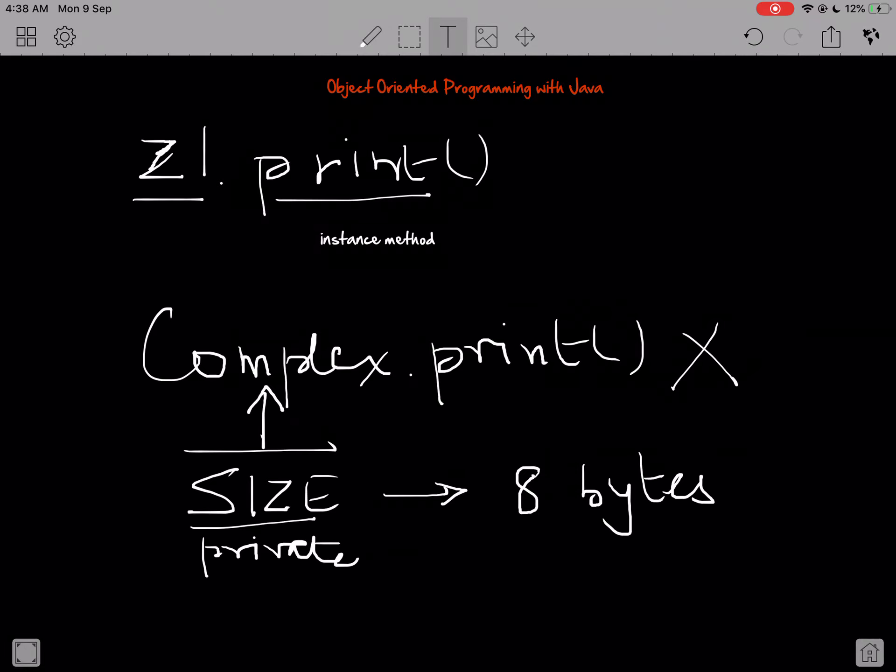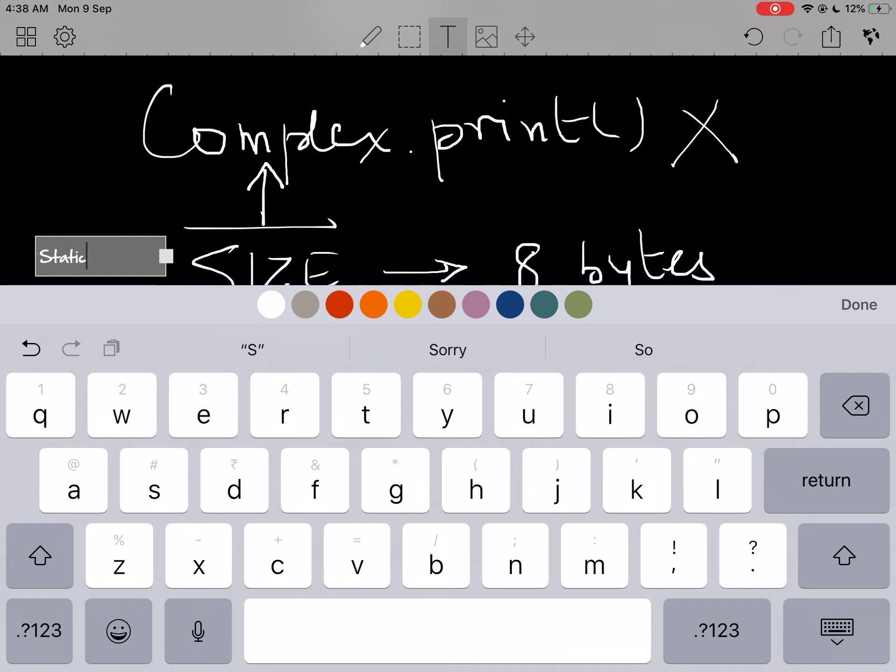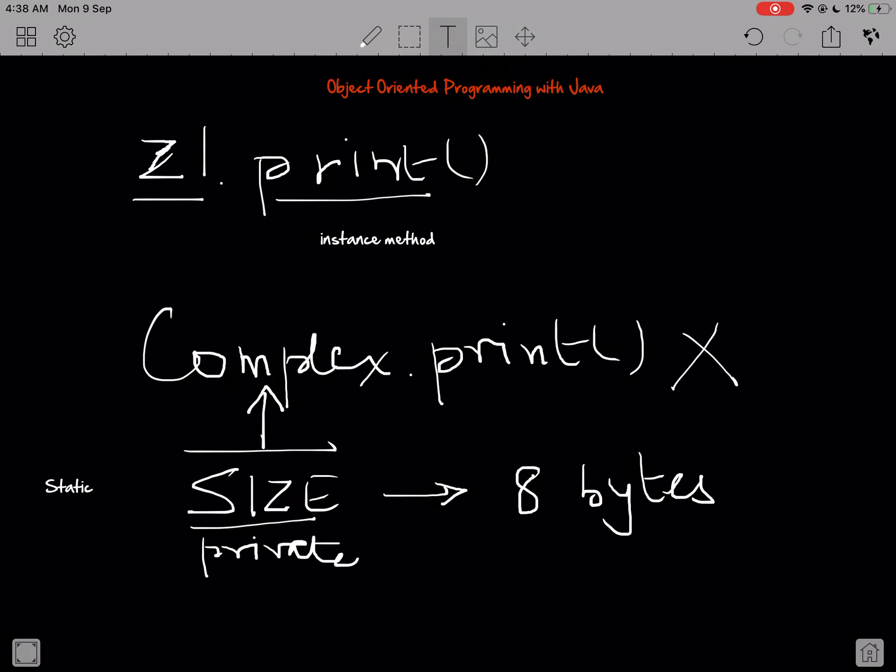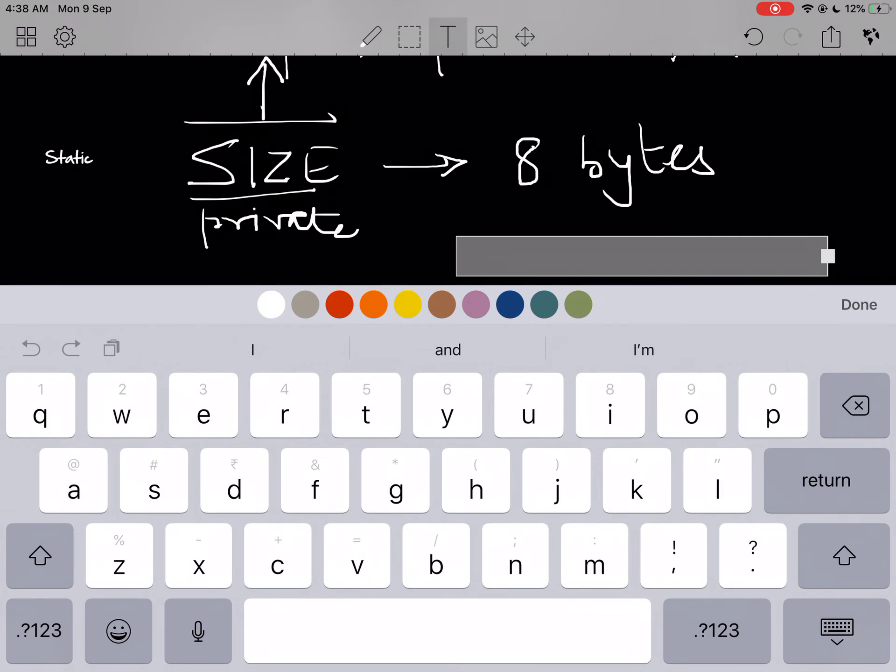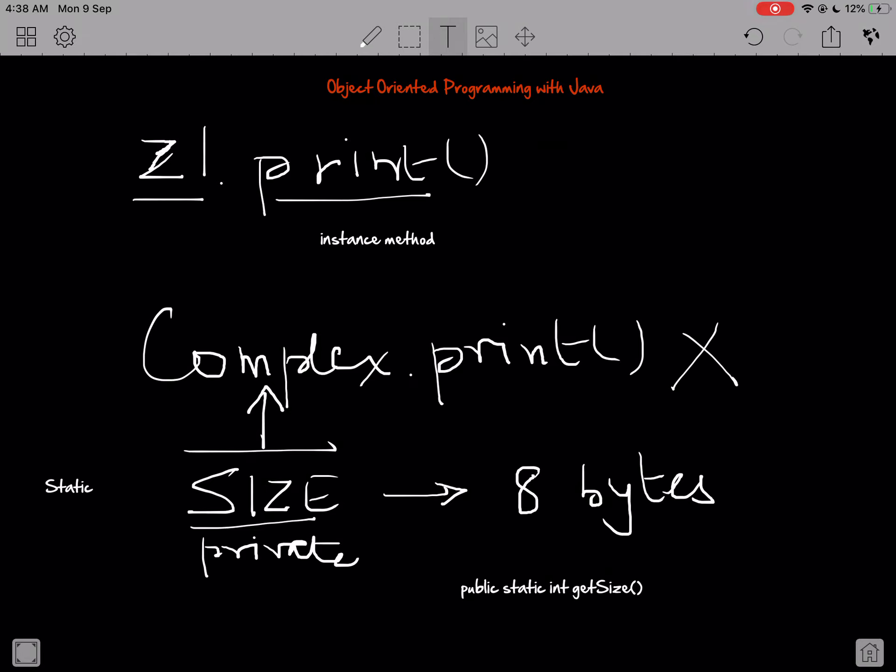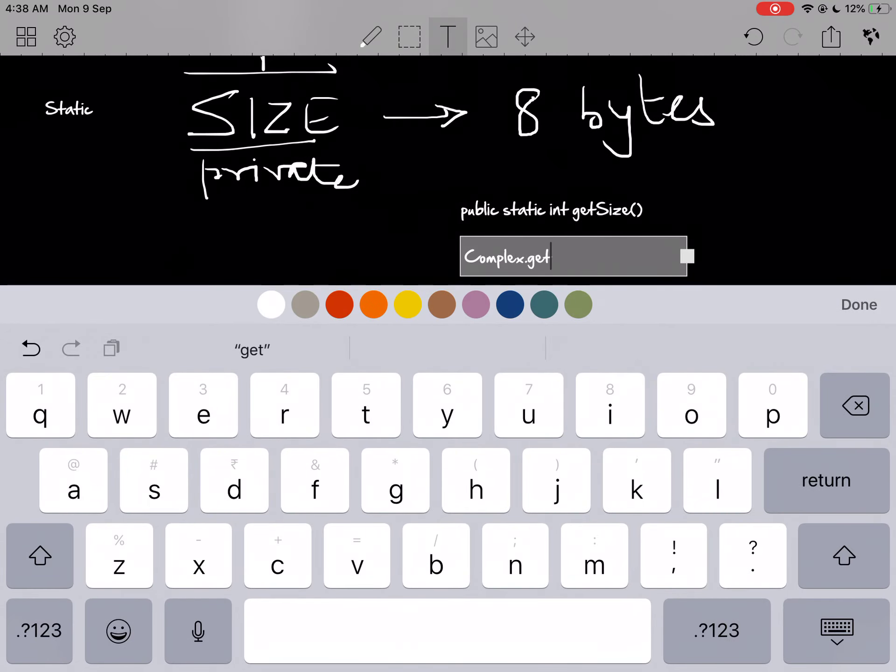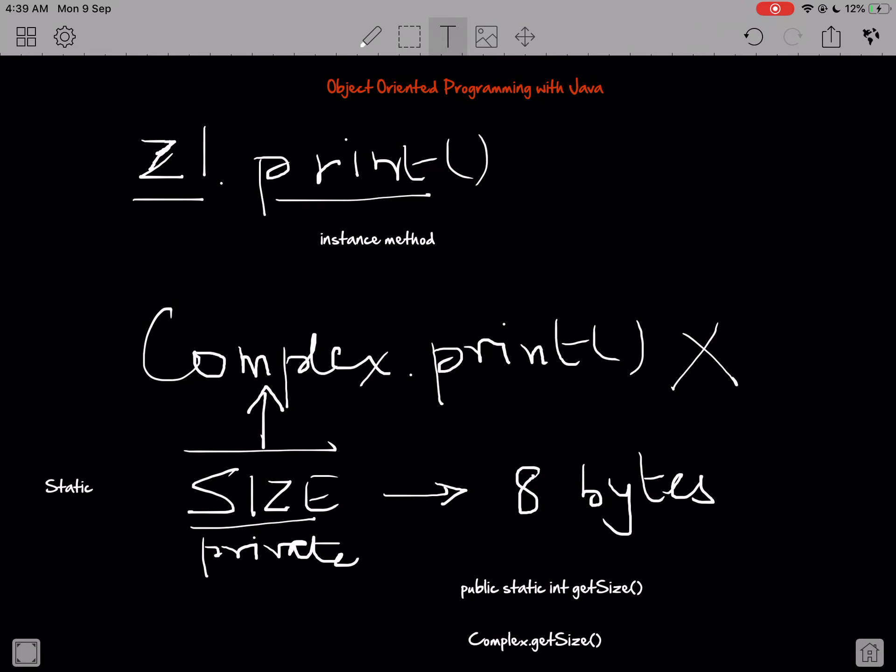So what we do is we make size as static, and let's say we make a method called getSize. We'll make that static. So I'll have something like public static int getSize, and this method will just return me the size. But now what I can do is something like this, which is Complex.getSize. And this makes perfect sense now because the size is related to the complex class itself.